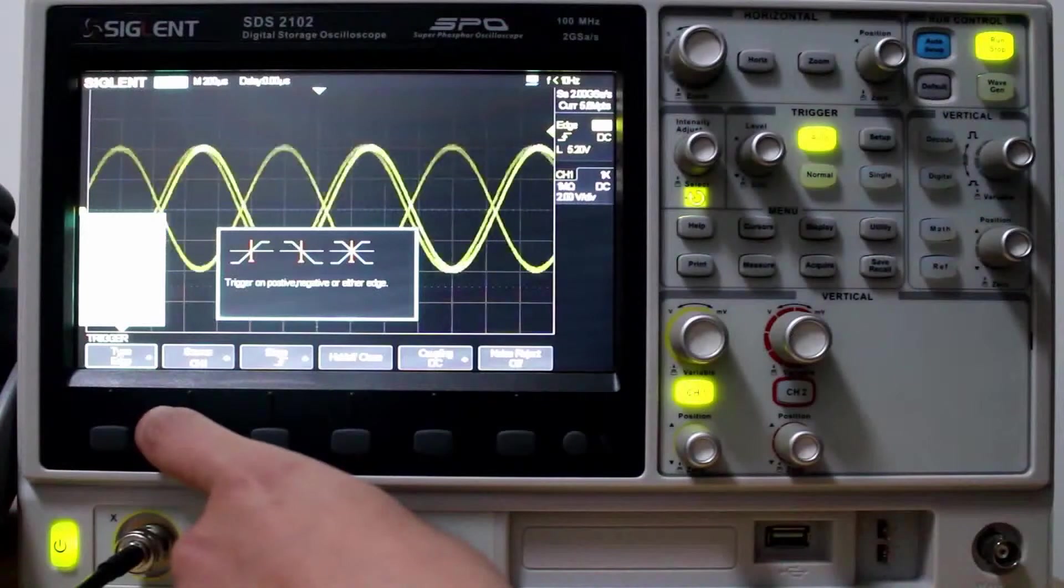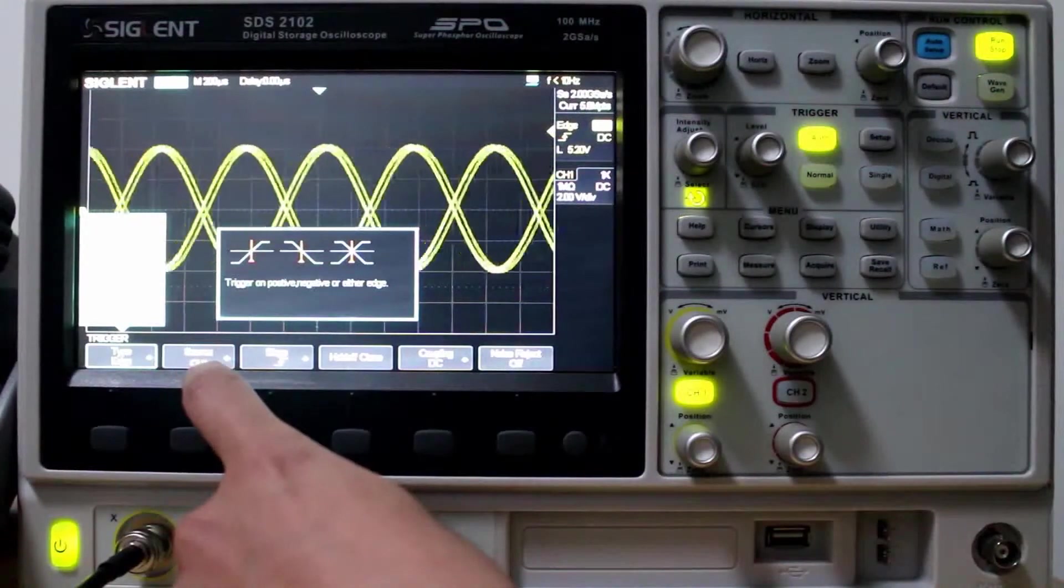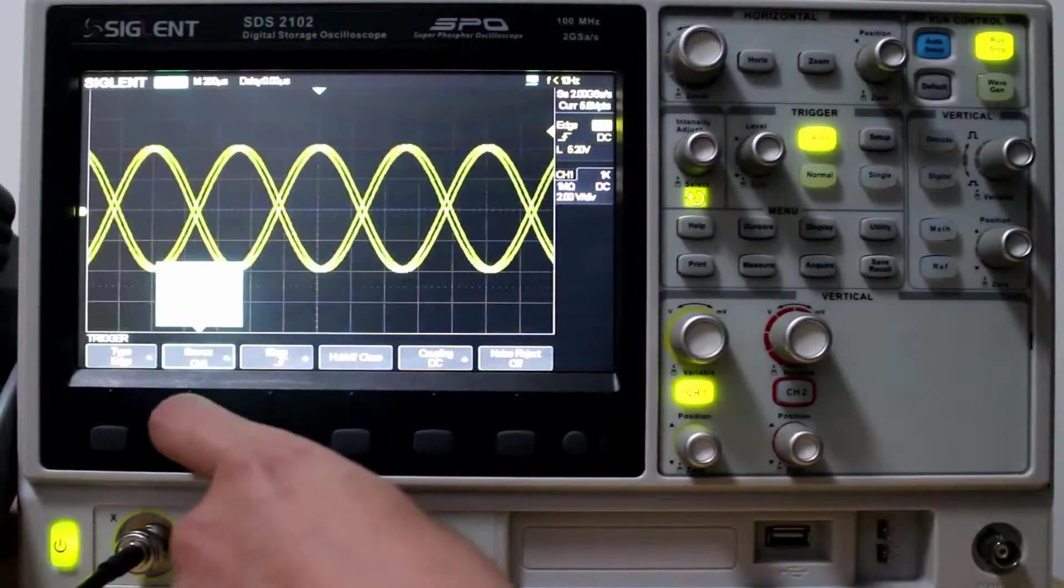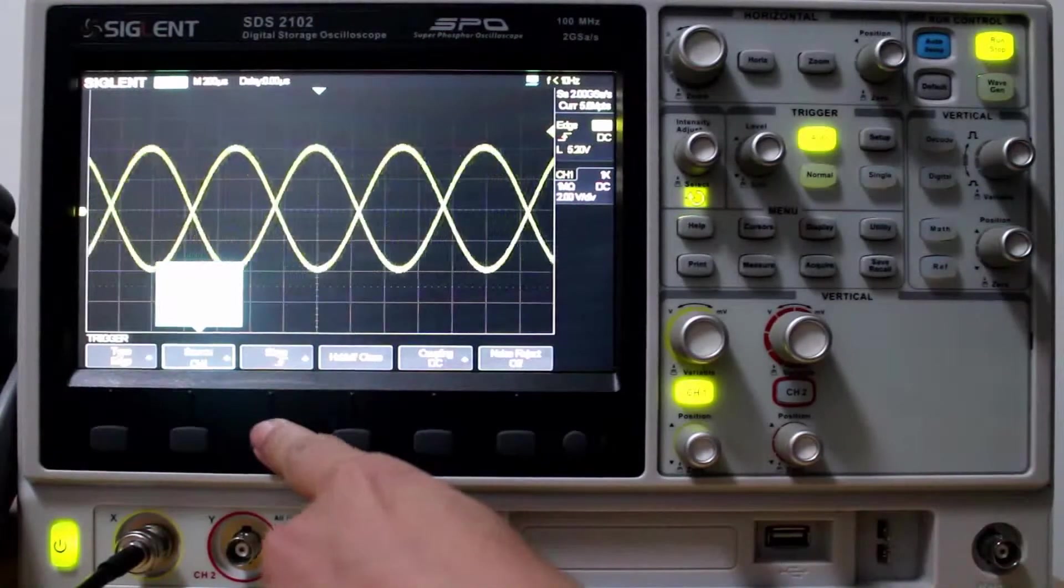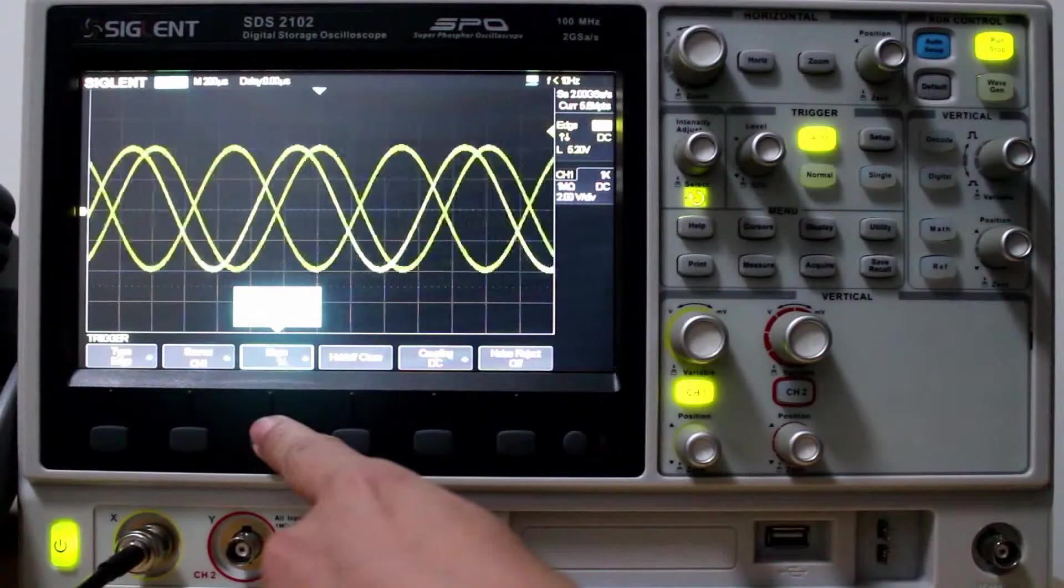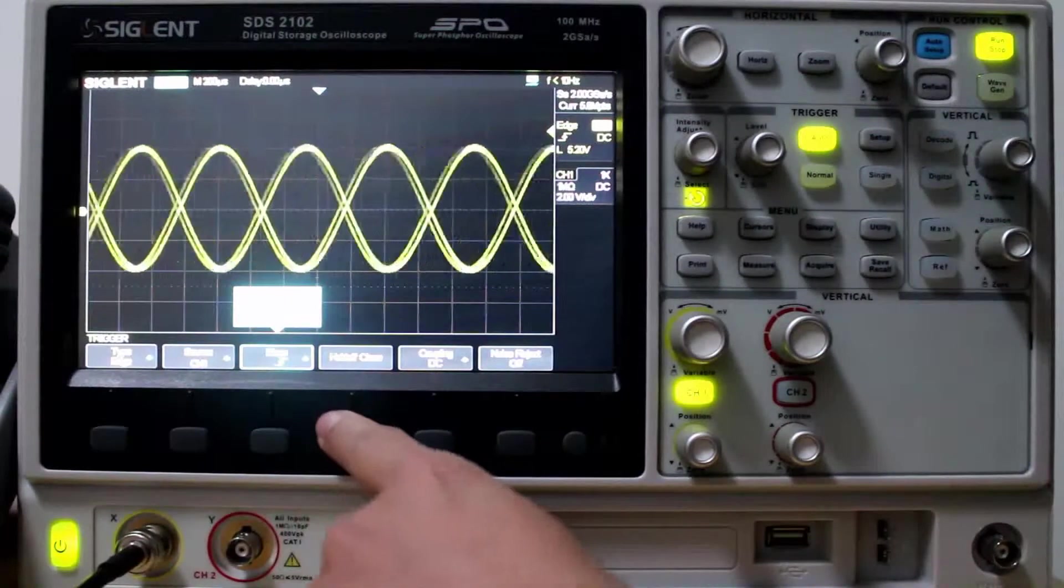We're going to set it to Edge. Then we're going to set our Source to Channel 1. Yes, already there. Then we set the Slope. We can do Rising, Falling, or both Rising and Falling. We're going to go to Rising.